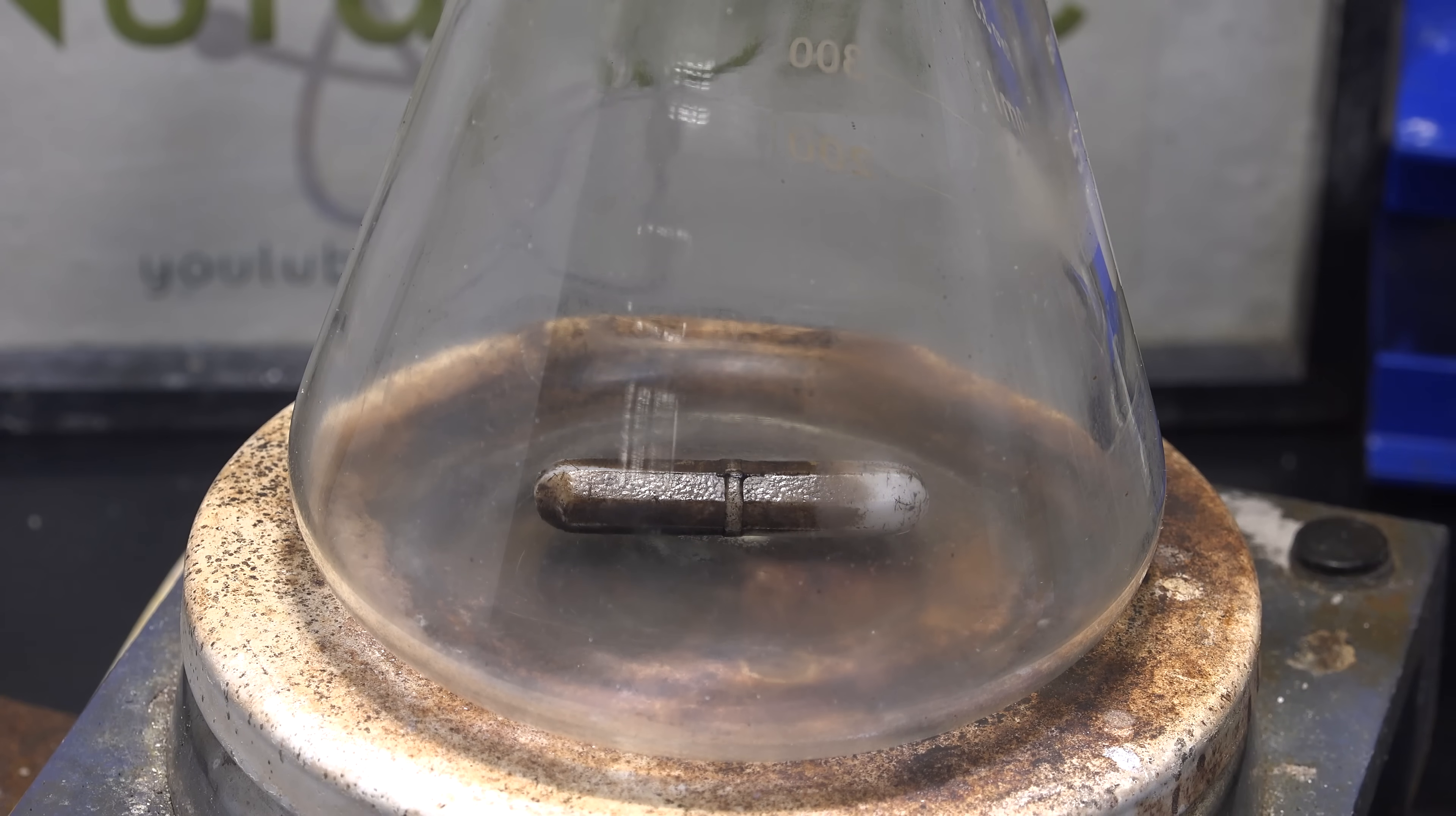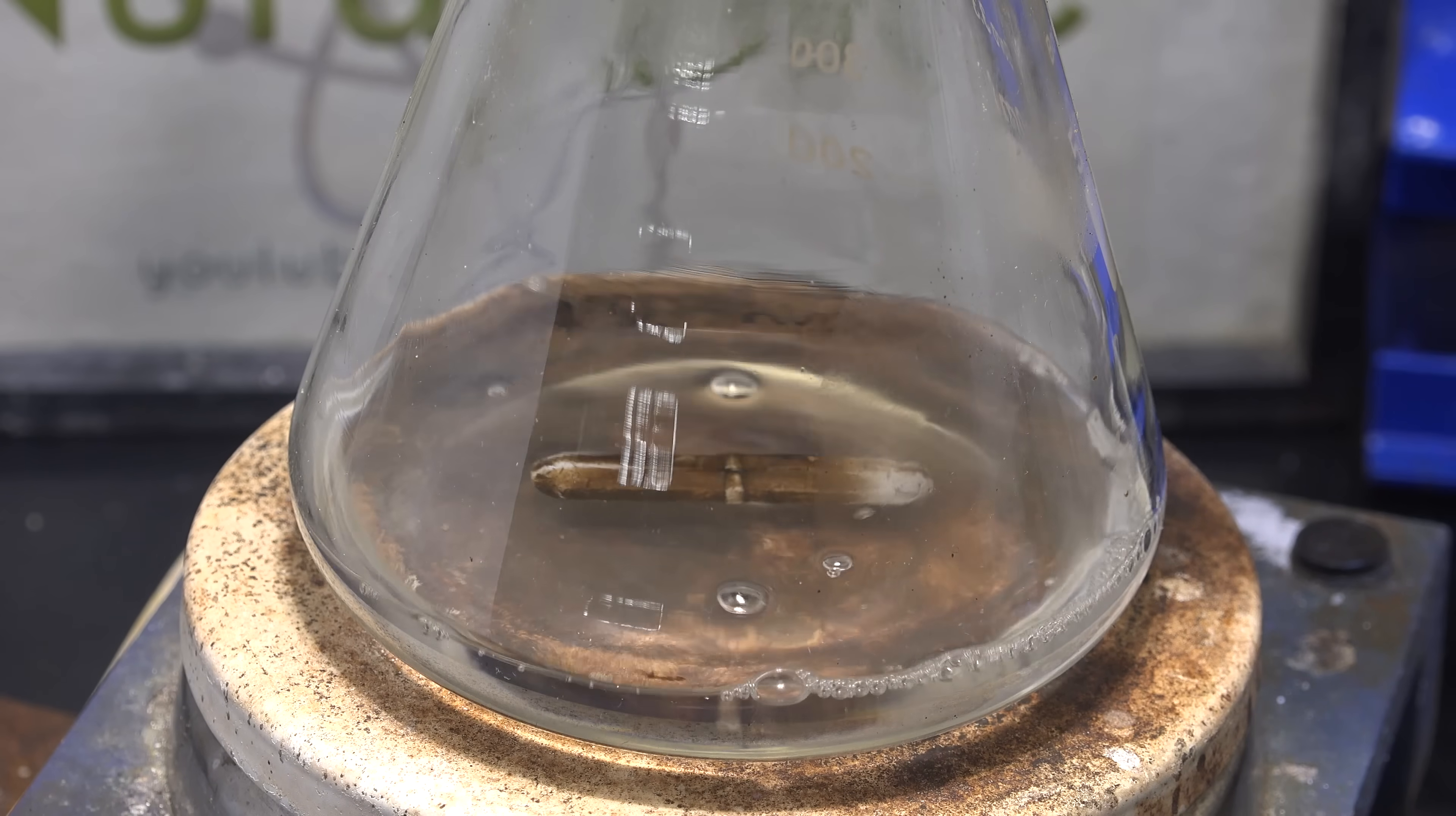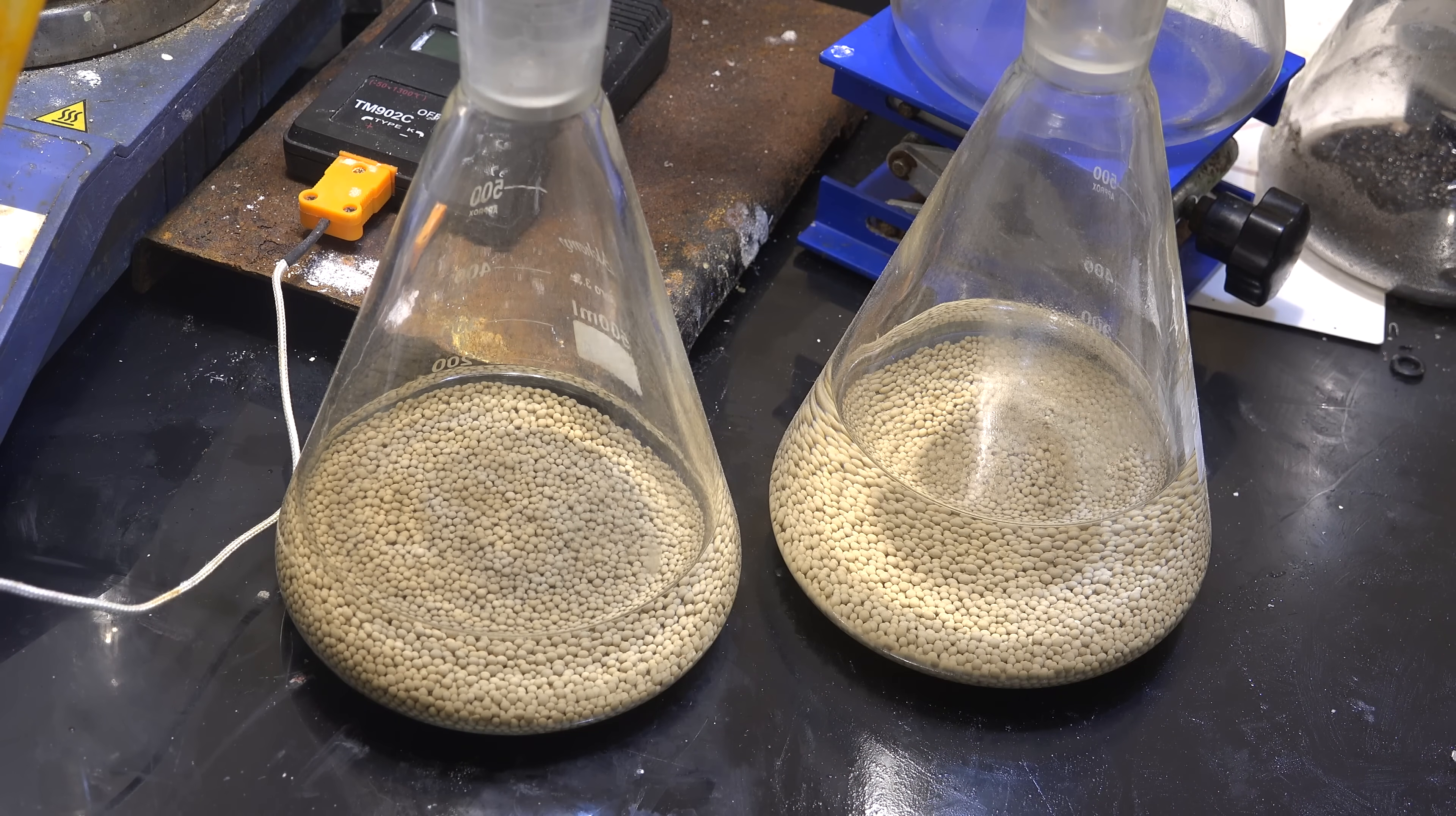Now in a separate flask we get 120 grams of chloroform. This can be made by the haloform process as shown in the previous video. On top we add about 300 mL of anhydrous methanol. This methanol was previously dried over molecular sieves.